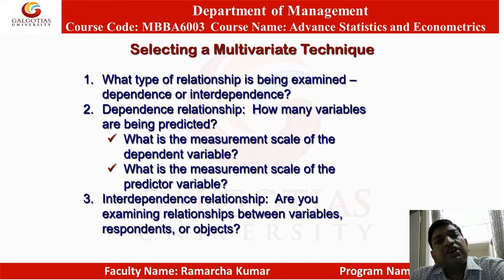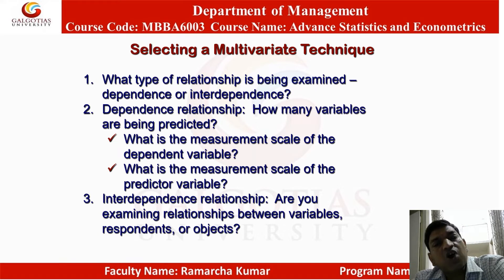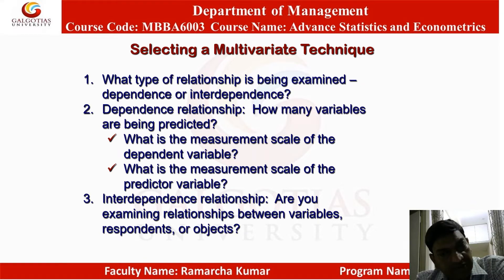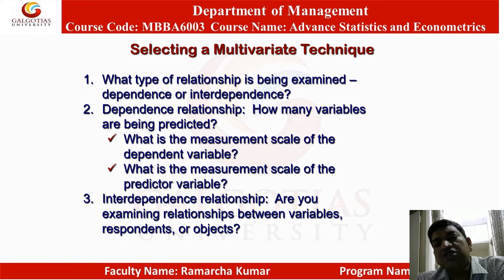When selecting a multivariate technique, first ask: what type of relationship is being examined — dependence or interdependence? This will decide what type of multivariate technique will be used. For a dependence relationship, consider how many variables are being predicted and what is the measurement scale of the dependent and independent variables. For an interdependence relationship, ask whether you are examining relationships between variables, respondents, or objects.